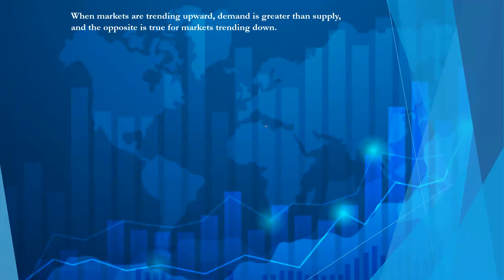When markets are trending upwards, demand is greater than supply, meaning buyers are more than sellers. And the opposite is true for a market which is trending downwards.